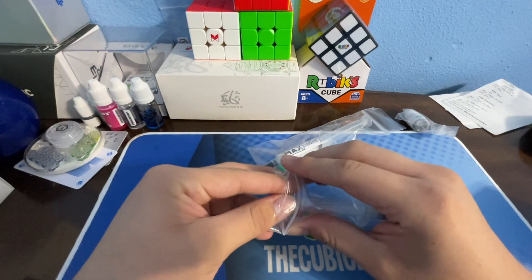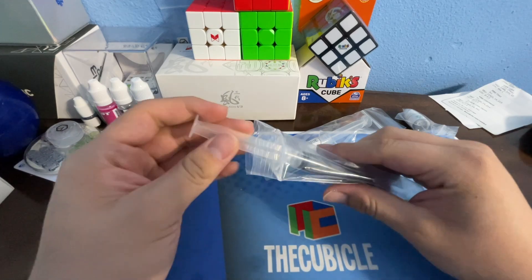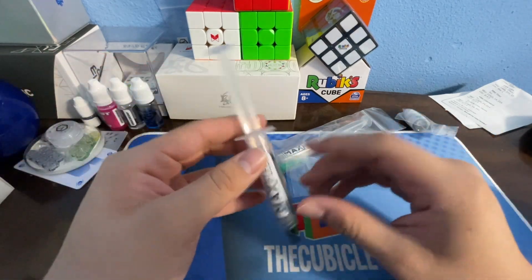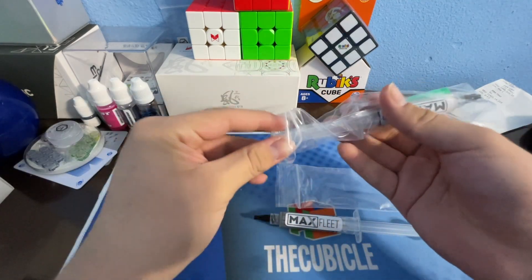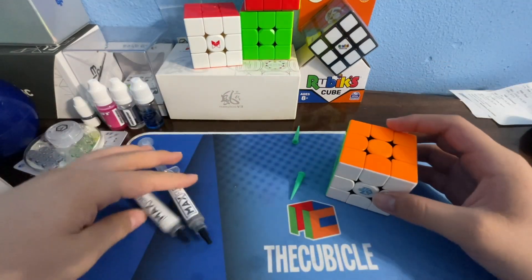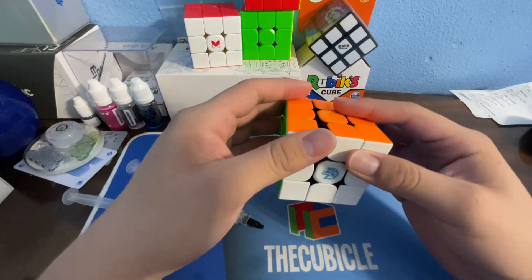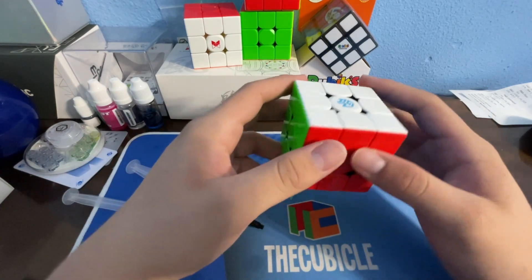These are the lubes that Max Park uses in almost all of his setups as they're named after him, and apparently they're supposed to make you fast like Max Park. So I'm going to try that out right now. I'm going to test out these lubes on this Gan 356M that I have lying around.